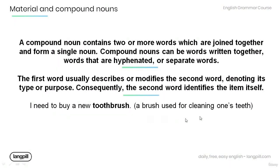Have a look at the example below: 'I need to buy a new toothbrush.' Toothbrush is a compound noun written together. The first word, tooth, describes or modifies the purpose or type of the second word, which is brush. And so, toothbrush is a brush used for cleaning one's teeth.